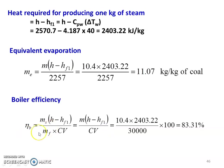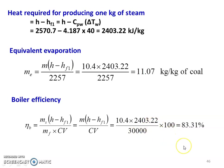Boiler efficiency: η_B = M_s × (H minus H_f1) divided by M_F × C_v, which is the heat utilized for conversion of water into steam divided by the heat produced by burning the coal. Simplifying: M × (H minus H_f1) divided by C_v = 10.4 × 2403.22 divided by 30,000 × 100 = 83.31%. The answers: equivalent evaporation is 11.03 kg per kg of coal, boiler efficiency is 83.31%.